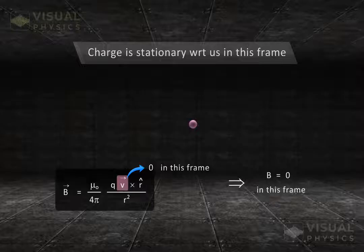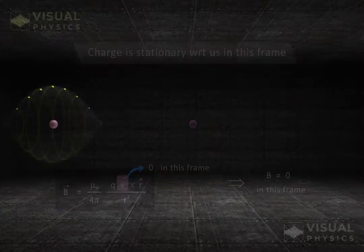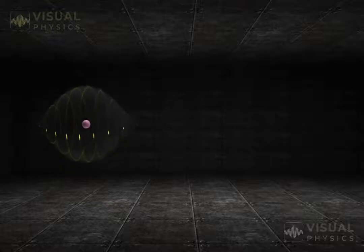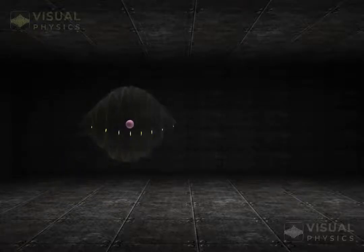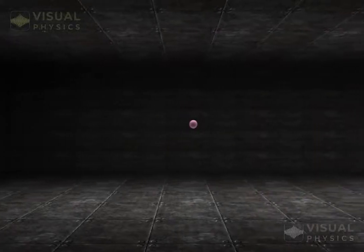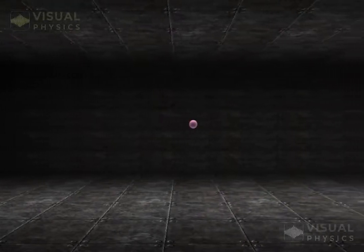This is what experimental observation confirms. That is, when we are stationary and the charge is moving, we perceive a magnetic field produced by it. The moment we start moving with the charge, its magnetic field disappears.